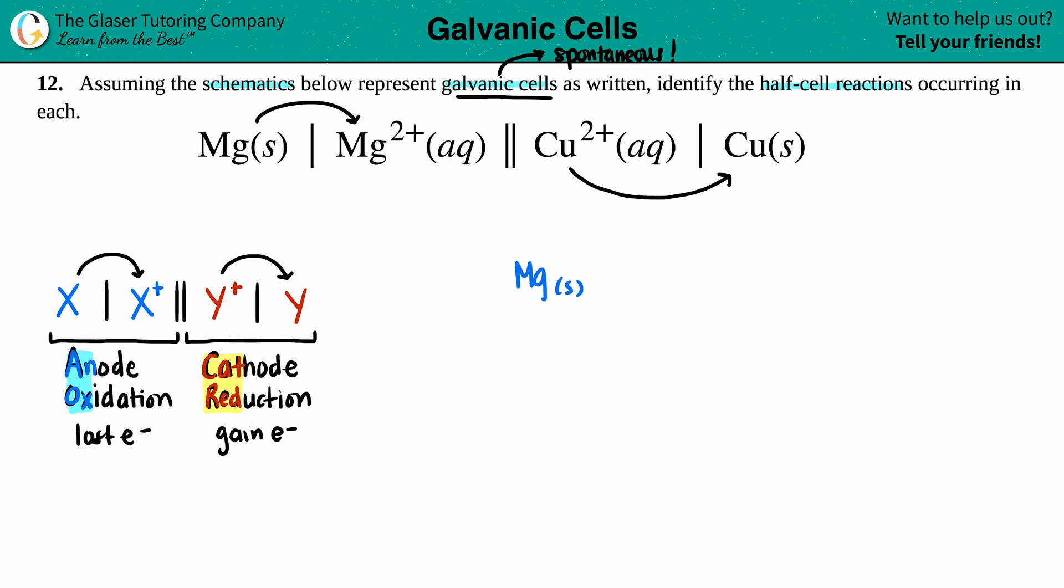That's aqueous. And then let's do the second one. We have copper 2+, that's aqueous, and this will turn into copper solid.